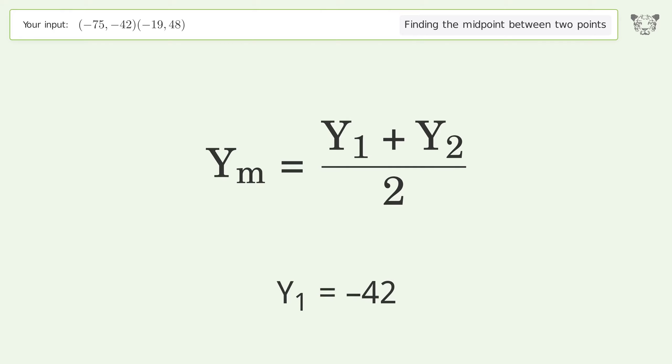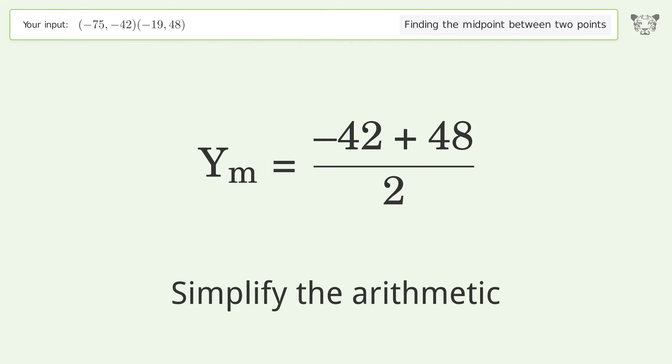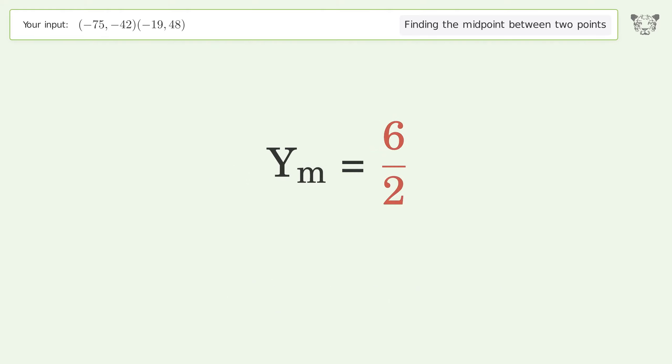Use the y values in the midpoint formula to find the midpoint's y-coordinate. y₁ = -42, y₂ = 48. Simplify the arithmetic.